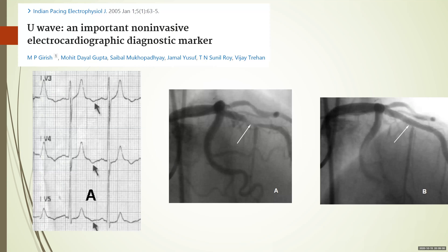This is an article published in the Indian Pacing and Electrophysiology Journal; the main author was MP Girish. You can see prominent U-wave inversions in V3, V4, and V5, corresponding to a significant — approximately 90% — proximal LAD lesion. The septal branch is visible, and what is proximal to the septal becomes the proximal LAD. You can see the 90% lesion in the proximal LAD, which was subsequently stented. This ECG might be reported as apparently normal, but on careful examination you can see negative U-waves.